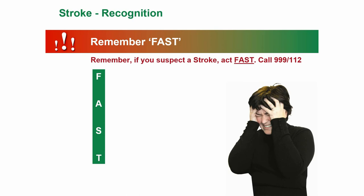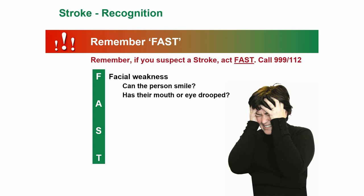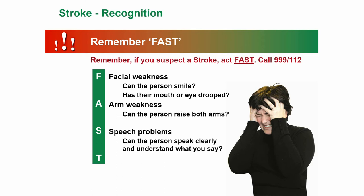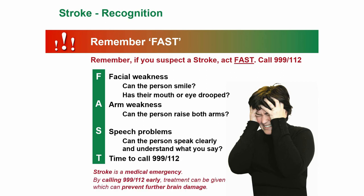For stroke, remember the acronym FAST. F is facial weakness — can the person smile, or has the mouth or eye drooped? A is arm weakness — can the person raise both arms? S is speech problems — can the person speak clearly and understand what you say? T is time to call the emergency services, either 999 or 112. Stroke is a medical emergency; by calling early, treatment can be given which can prevent further brain damage.